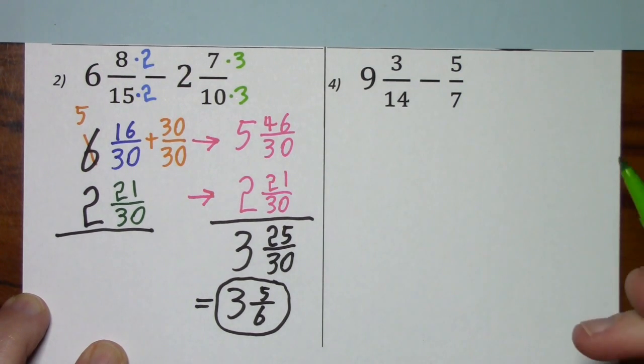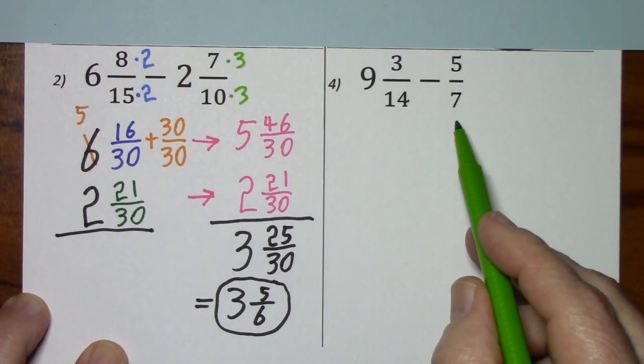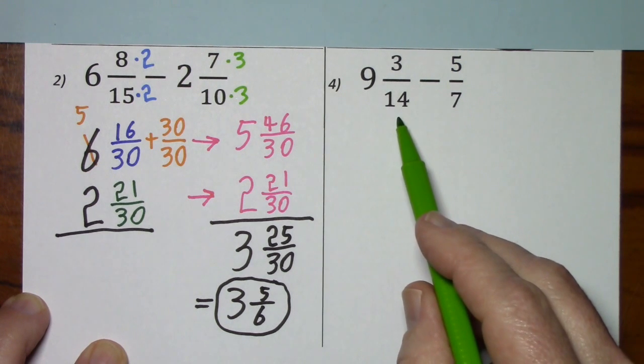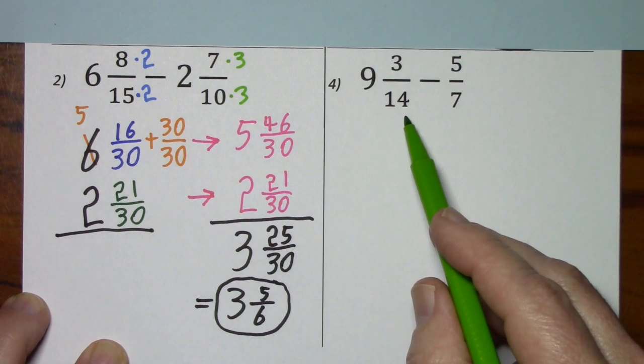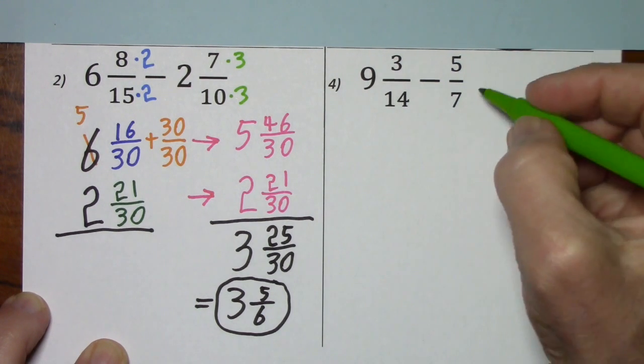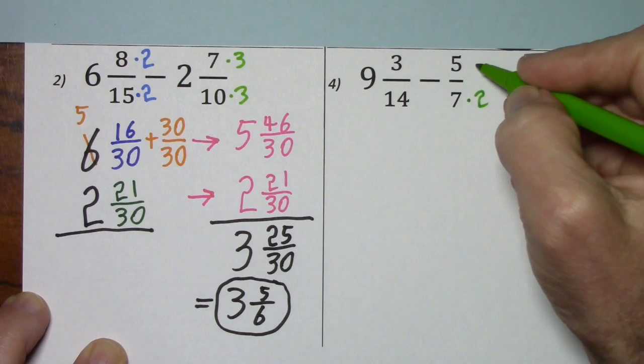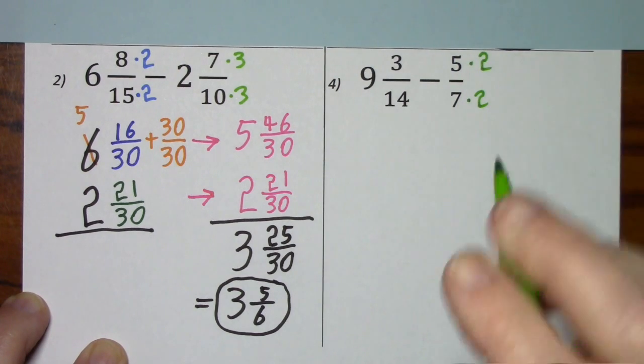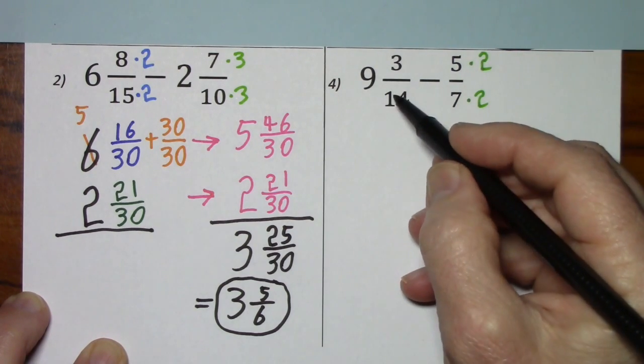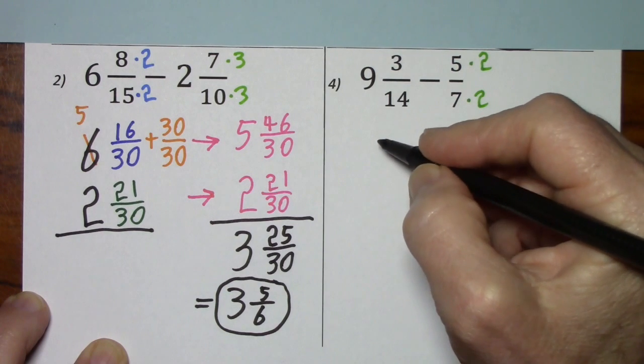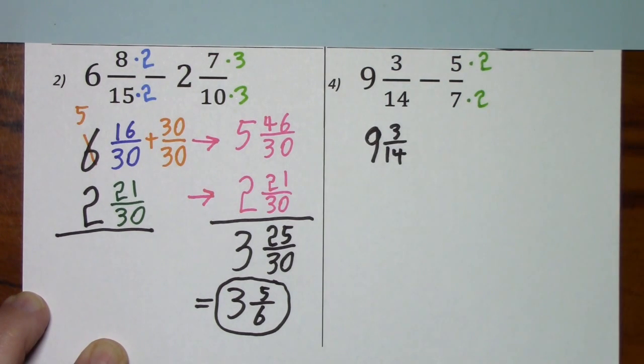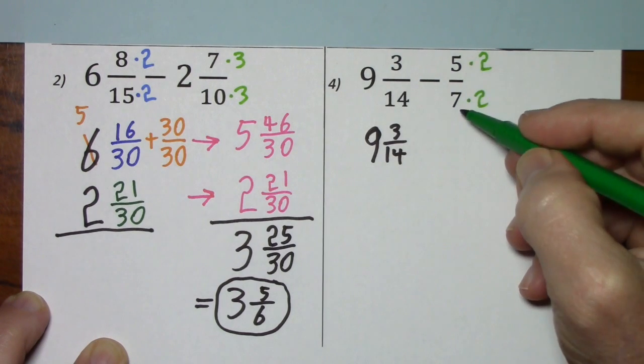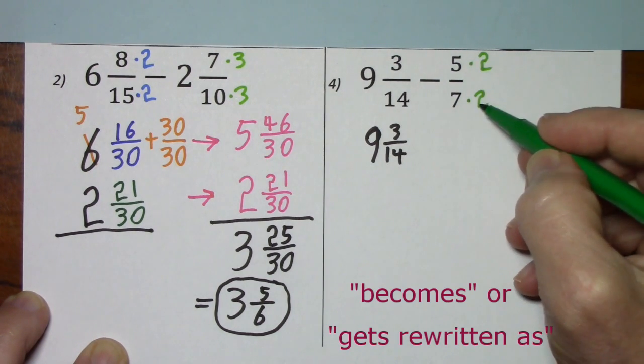Looking at number 4, we need common denominators. But it turns out that 14 will work because 7 goes into 14. To get from 7 to 14, you multiply by 2. Do the same to the numerator. So, 9 and 3 fourteenths just stays 9 and 3 fourteenths. But 5 sevenths becomes 10 fourteenths.